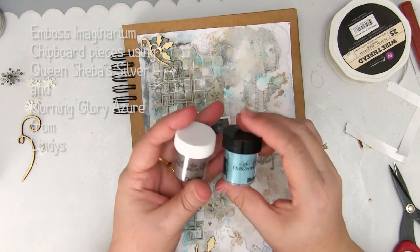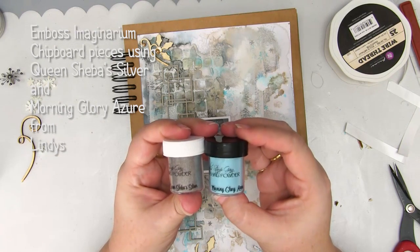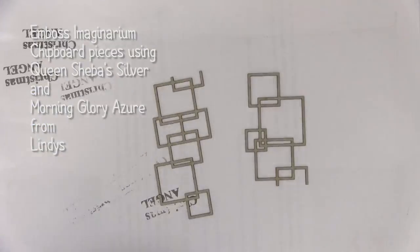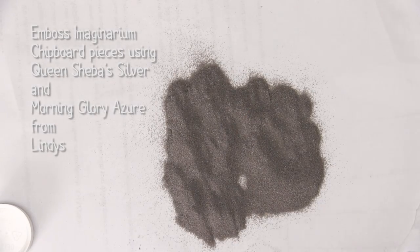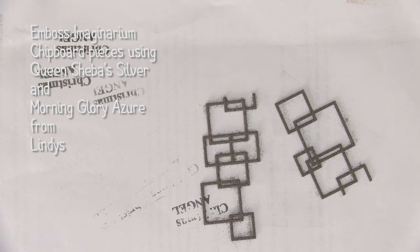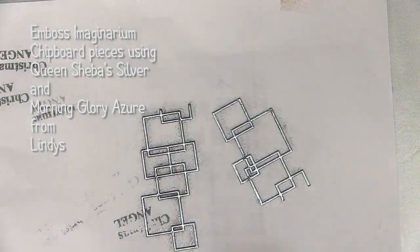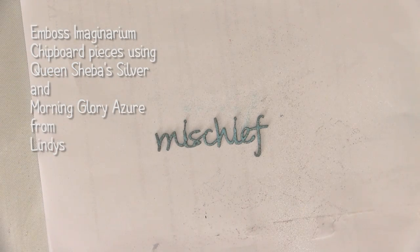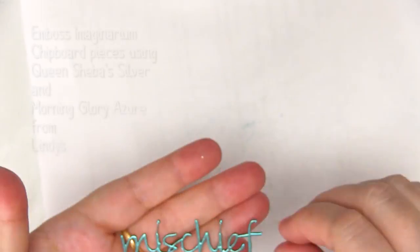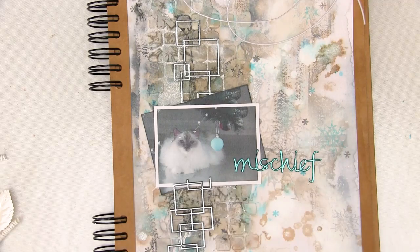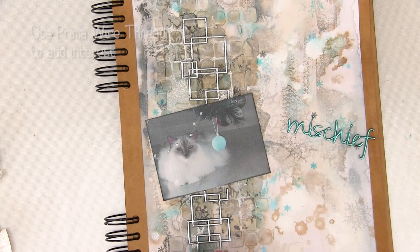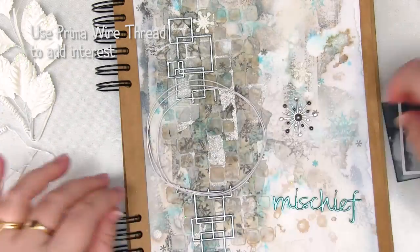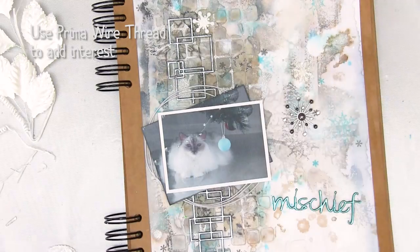I'm going to start with some embossing powders from Lindy's Stamp Gang. I've got Morning Glory Azua and Queen Sheba's Silver. Both of these are similar to the colors I already have in the background, so they're going to coordinate beautifully. I'm going to use my Versamark pad and the Queen of Sheba's Silver to add some color to these gorgeous Imaginarium chipboard designs. I'm going to add the Queen of Sheba's Silver to these little squares and the Morning Glory Azua to the beautiful word Mischief, which perfectly sums up my mischiefy little kitten. I need a few more elements to bring this together, so I'm going to make a little circle out of some Prima wire thread to help focus the eye on the page.